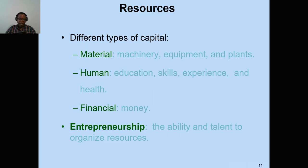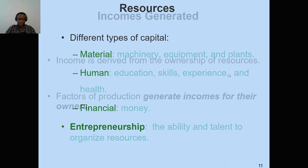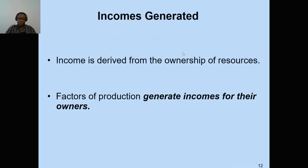It is important to be comfortable distinguishing between the three types of capital: material, human, and financial. The last type of resource is entrepreneurship, which is the ability and talent to organize resources to produce goods and services. An entrepreneur is characterized by someone who can identify an opportunity for profit and has the ability to organize the other factors of production — land, labor, and capital. Crucially, an entrepreneur takes risk; you cannot talk of an entrepreneur without risk-taking.